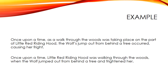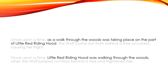Let's go back to our example. Version one: 'Once upon a time, as a walk through the woods was taking place on the part of Little Red Riding Hood, the wolf's jump out from behind a tree occurred, causing her fright.' Version two: 'Once upon a time, Little Red Riding Hood was walking through the woods when the wolf jumped out from behind a tree and frightened her.' Let's compare these section by section. 'As a walk through the woods was taking place on the part of Little Red Riding Hood' corresponds to 'Little Red Riding Hood was walking through the woods.'